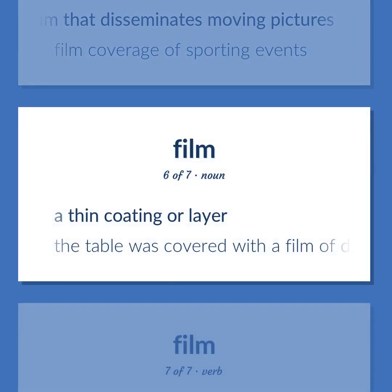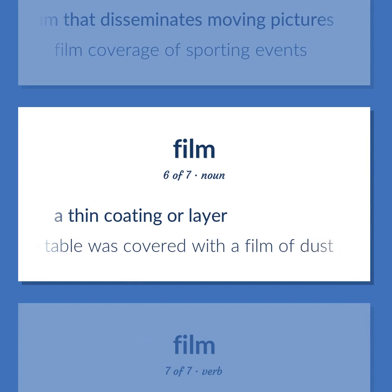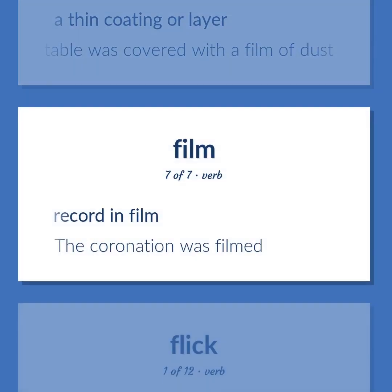Film (noun): A thin coating or layer. Example: The table was covered with a film of dust. Film (verb): Record in film. Example: The coronation was filmed.